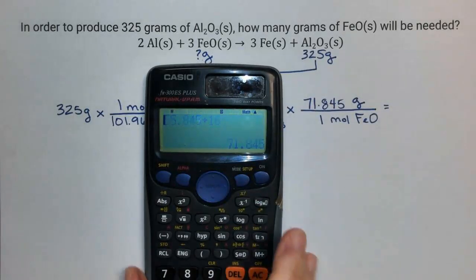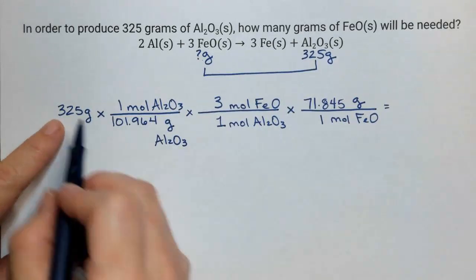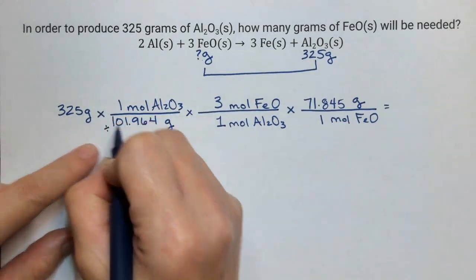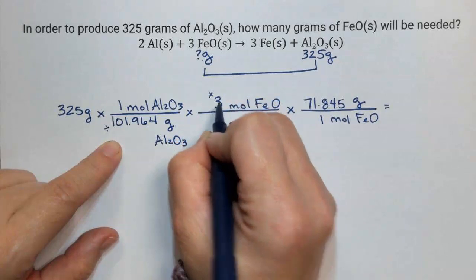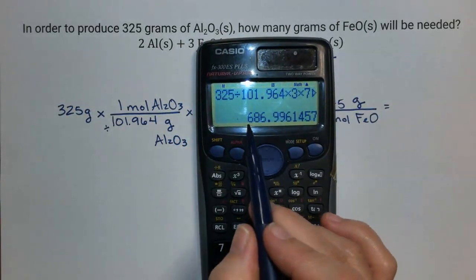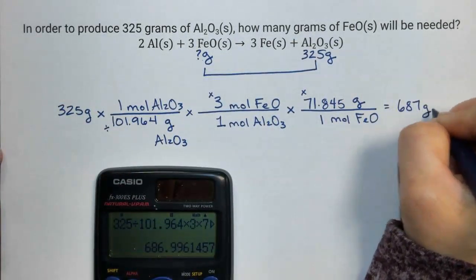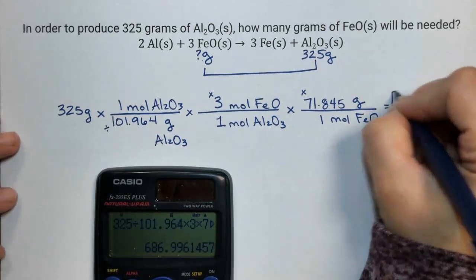Now I have that mass. I can calculate my final answer. It's 325 divided by this times this times this, and it gets us a final answer of 687 grams of iron oxide.